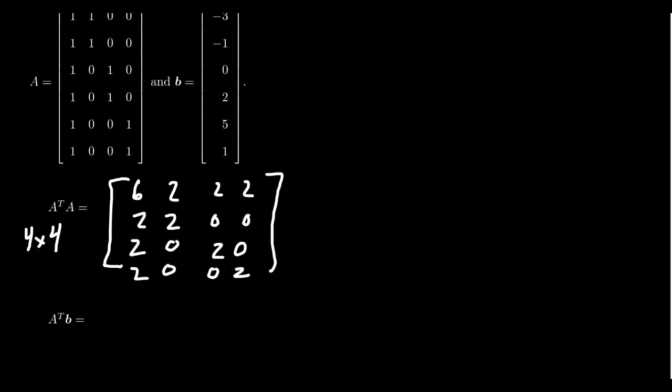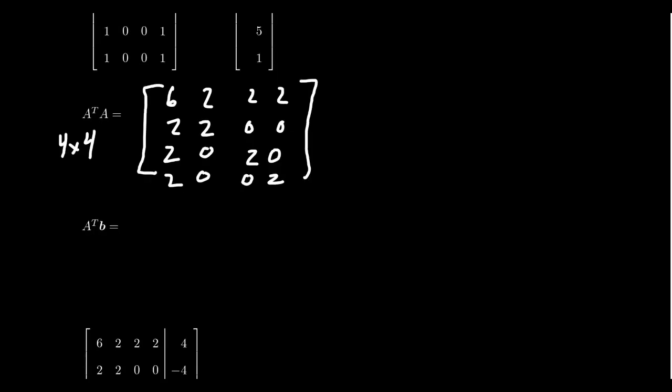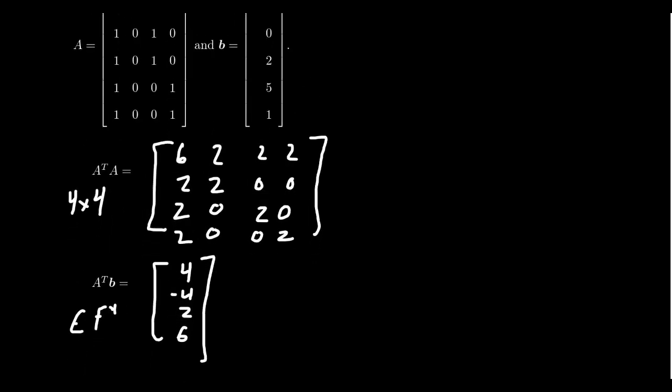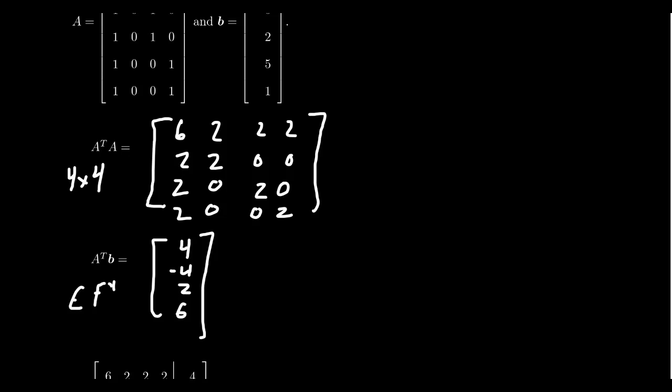If we take A transpose b, look at all those possible products. This is going to give you a vector inside of F4. When you go through the products, you end up with 4, negative 4, 2, 6. Again, I kind of skipped over the details there. Feel free to pause the video and calculate it yourself. Nice thing about multiplying a matrix by the transpose matrix, like A transpose A, is that all this is is just you take all the possible dot products of columns of A together. And A transpose b is just all the possible dot products of columns of A with the vector b.